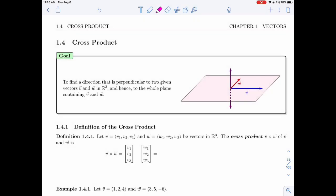In section 1.4, we will look at the cross product. So in this section, our goal is to find a direction that's perpendicular to two given vectors. So let's say I have this blue and this red vector here. I want a way to find either this direction or this direction algebraically.